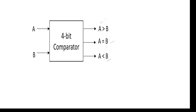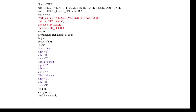If A equals B, it will show A equal to B as high and the remaining outputs will show zeros. If A is less than B, it will show A less than B as high and remaining will show zeros. For example, if A equals 4 and B equals 6, then A is less than B, so it will show A less than B equal to 1 and remaining will show zeros. Of course, it writes in the form of binary numbers in the code.